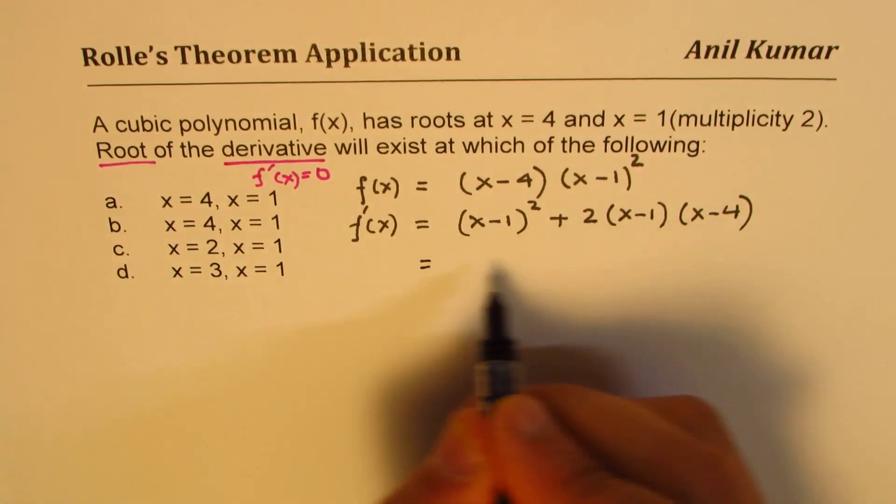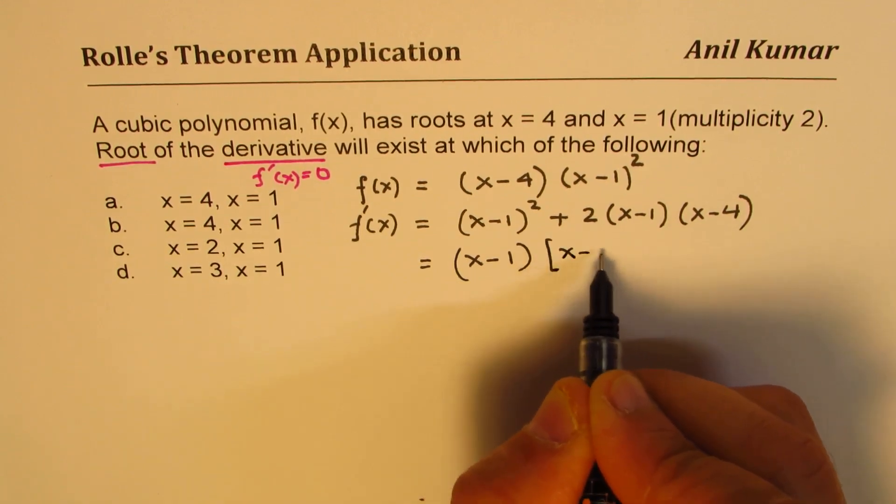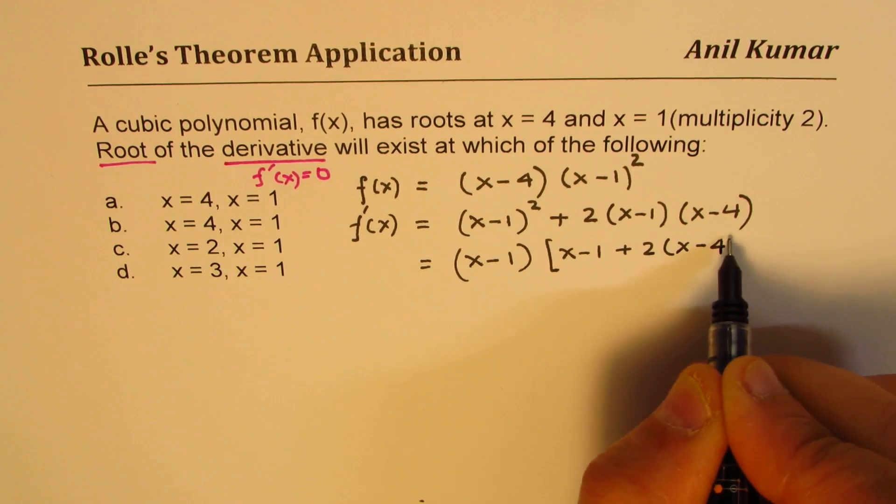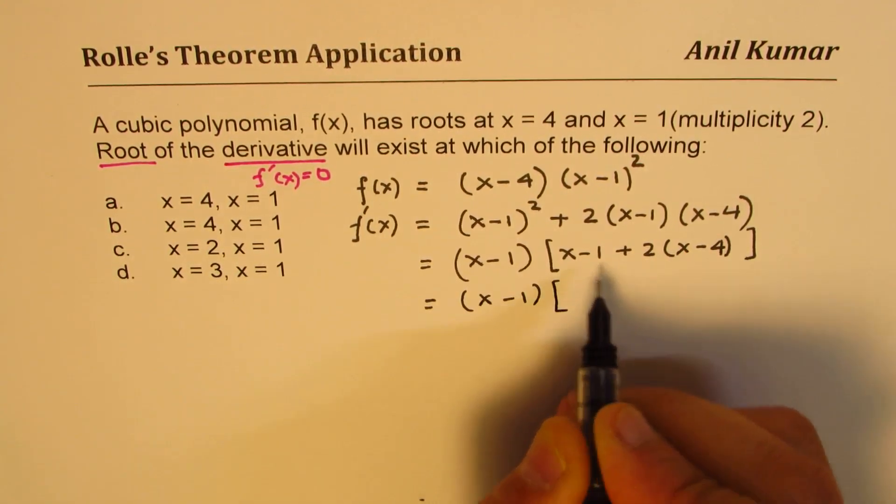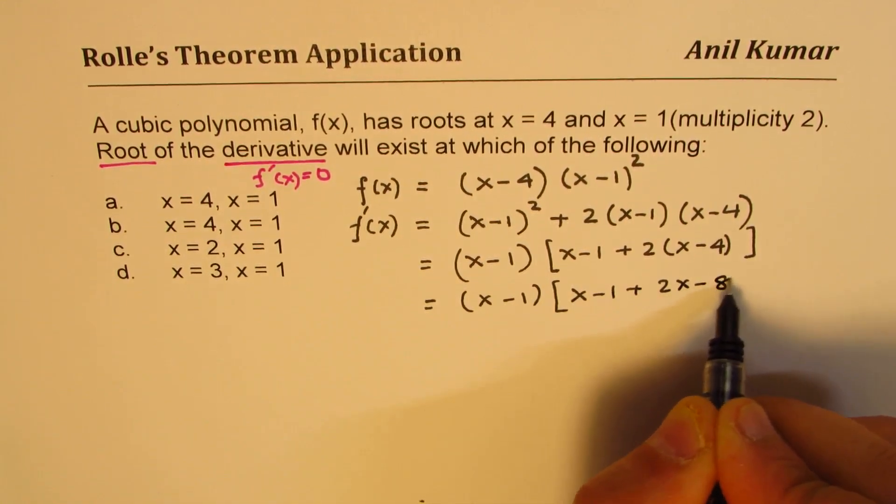Now we can take (x-1) common. So we get (x-1) plus 2 times (x-4). Open this up. So inside part only we are going to open. So we get (x-1) plus 2x minus 8.